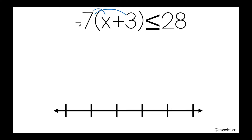So negative 7 times positive x is negative 7x. Negative 7 times positive 3 — remember, when you're multiplying and they have different signs, your answer is negative — so it's going to be negative 21.